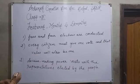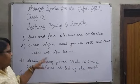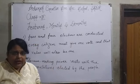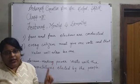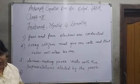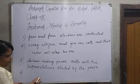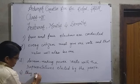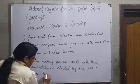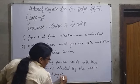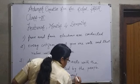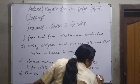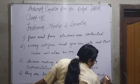The fourth feature of democracy is that in a democratic government, the ruling party is bounded by the limits, rules, and regulations of our constitution. These are the four main features of democracy.